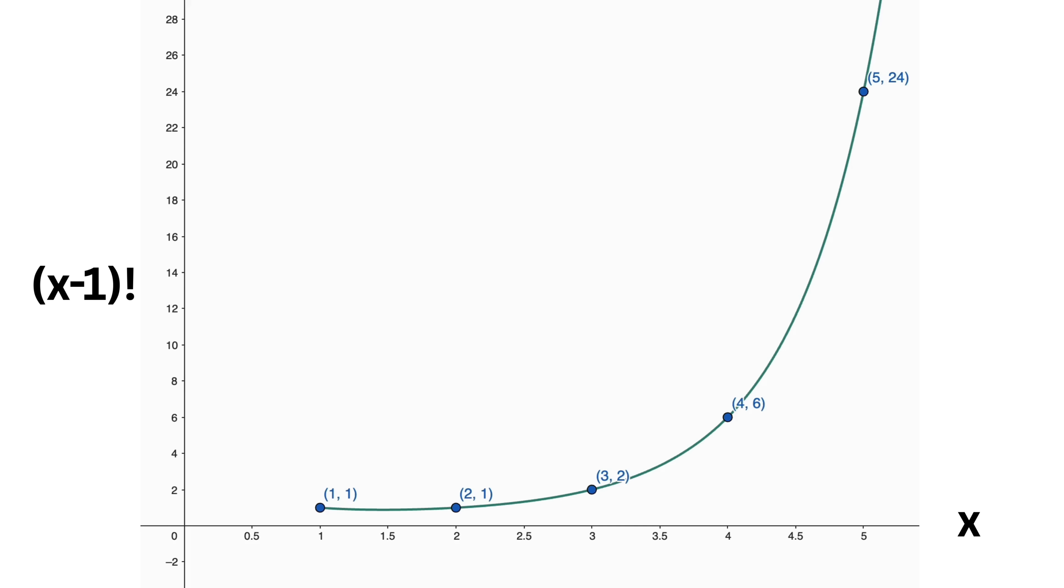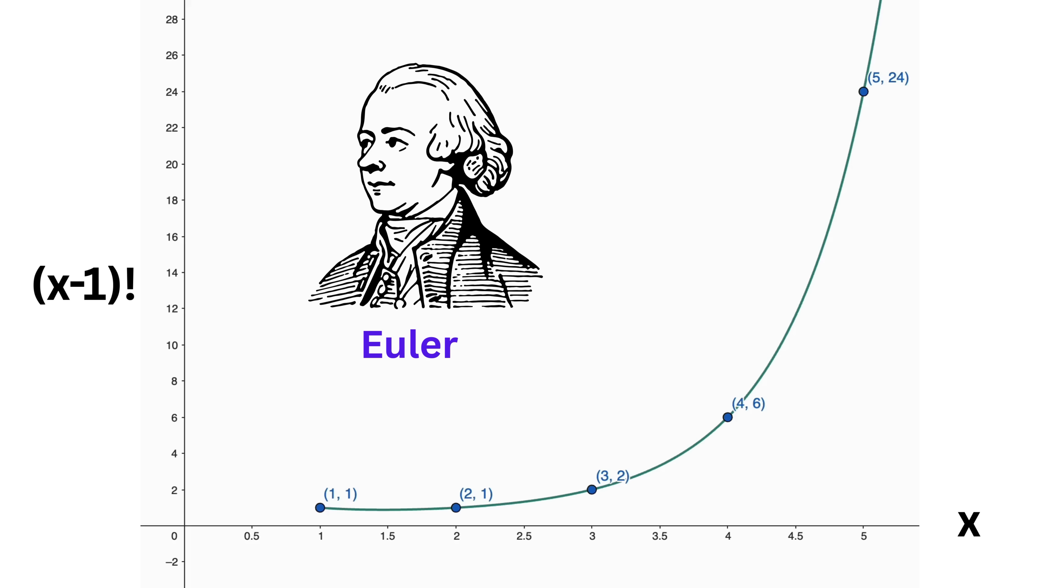Now here's where one of the greatest mathematicians of all time, the legendary Euler, enters the story. Euler wanted to figure out a way to smooth out the curve which has the following desirable properties.